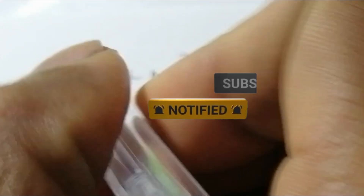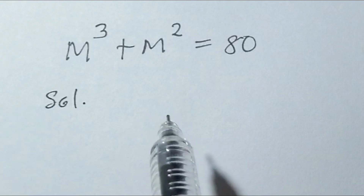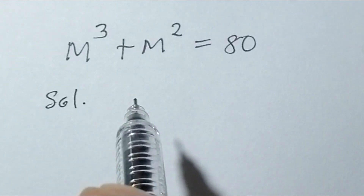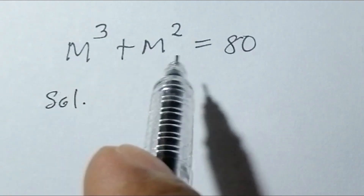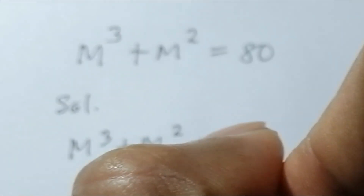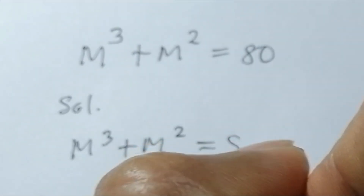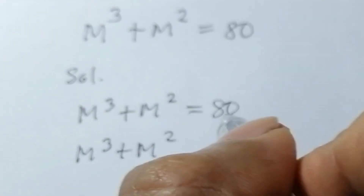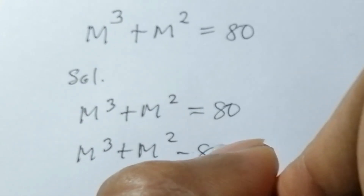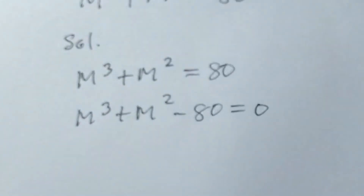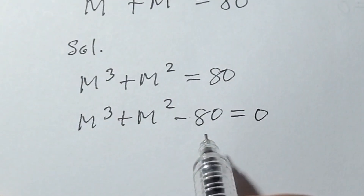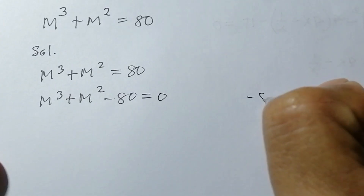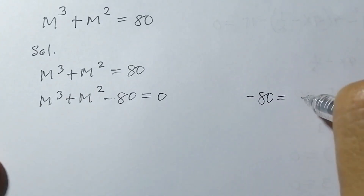Let's get started. The first thing to do is equate this into zero. We write m³ plus m² equals 80, then we move 80 to the left side: m³ plus m² minus 80 is equal to zero.